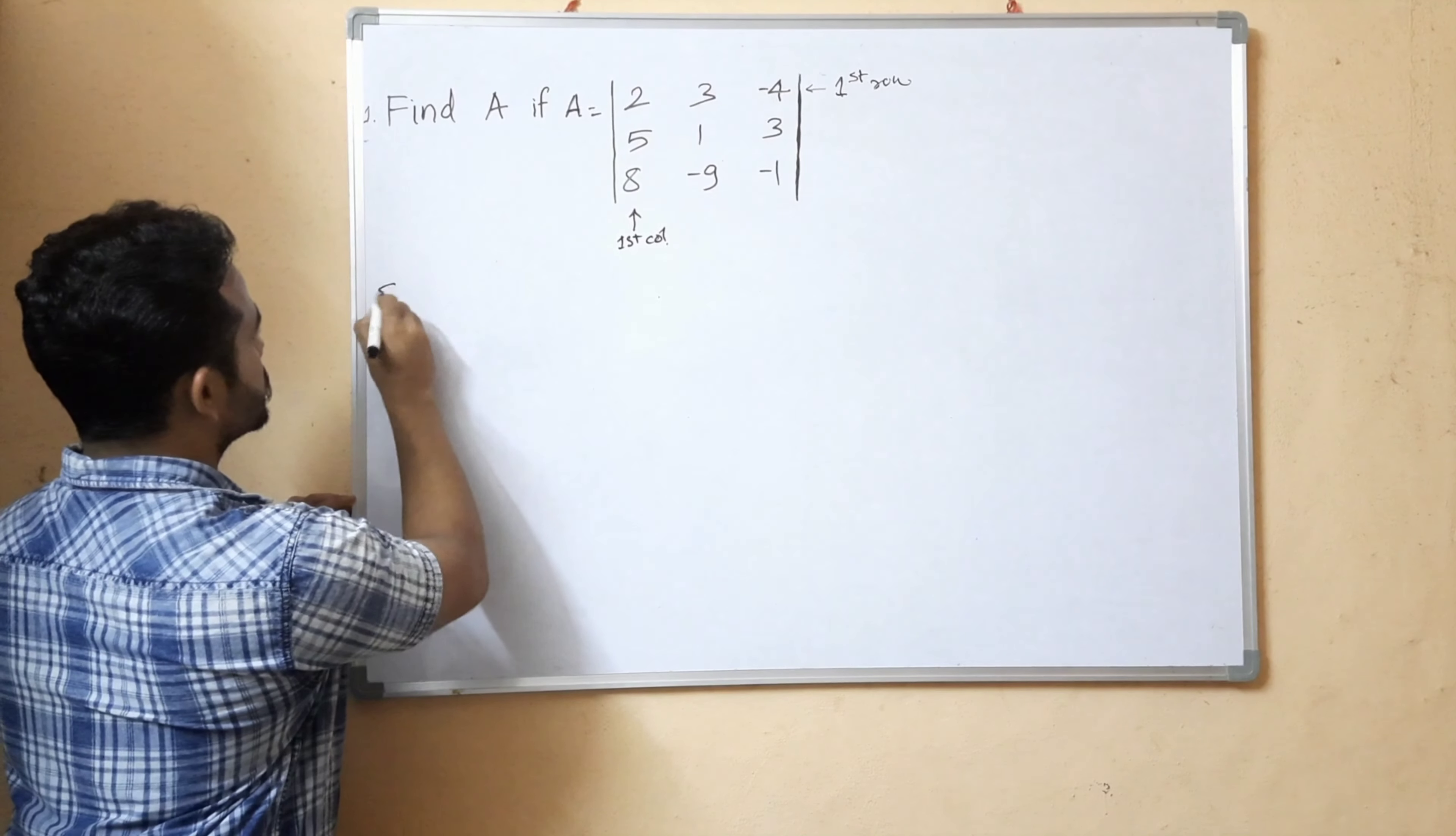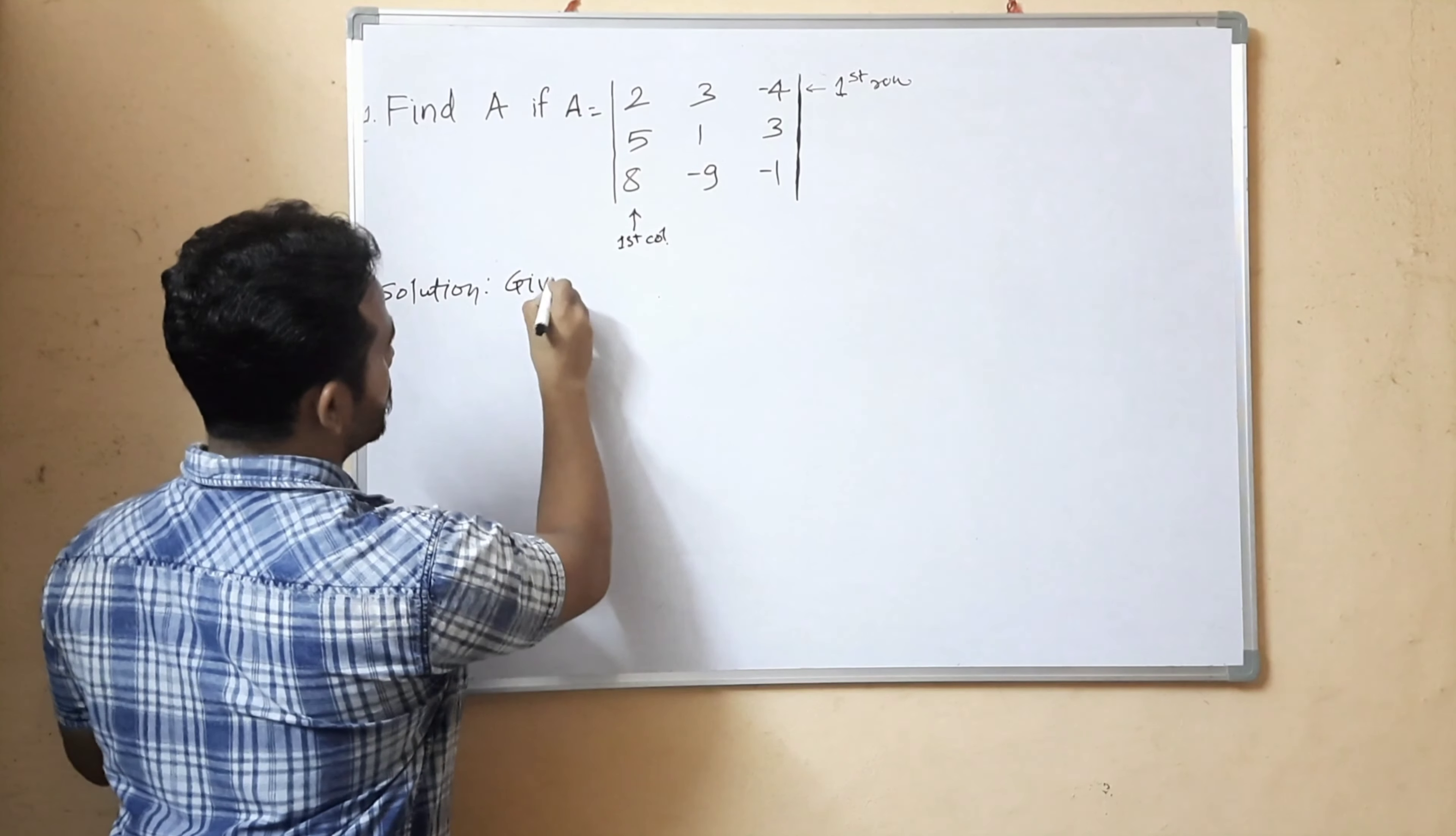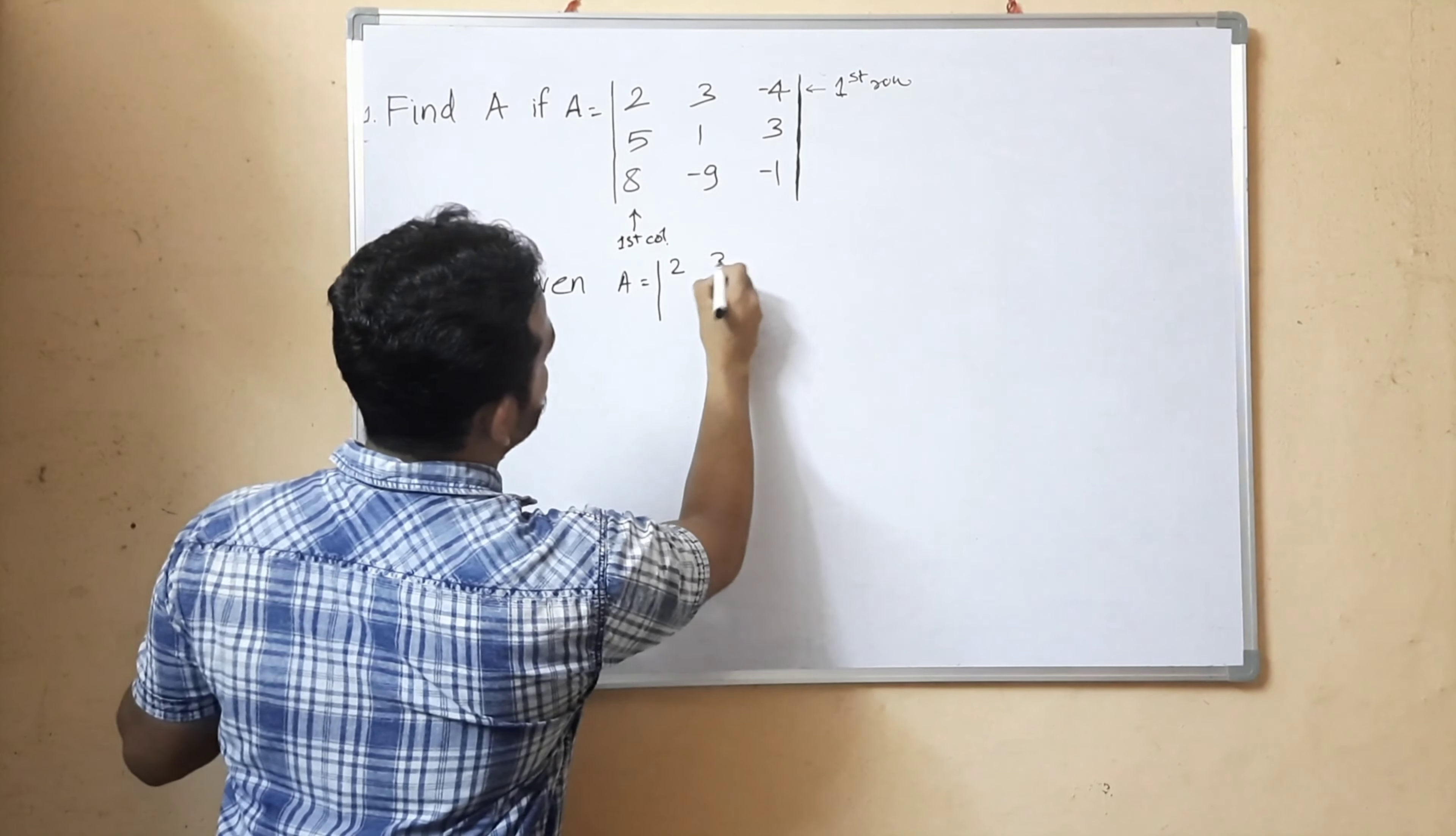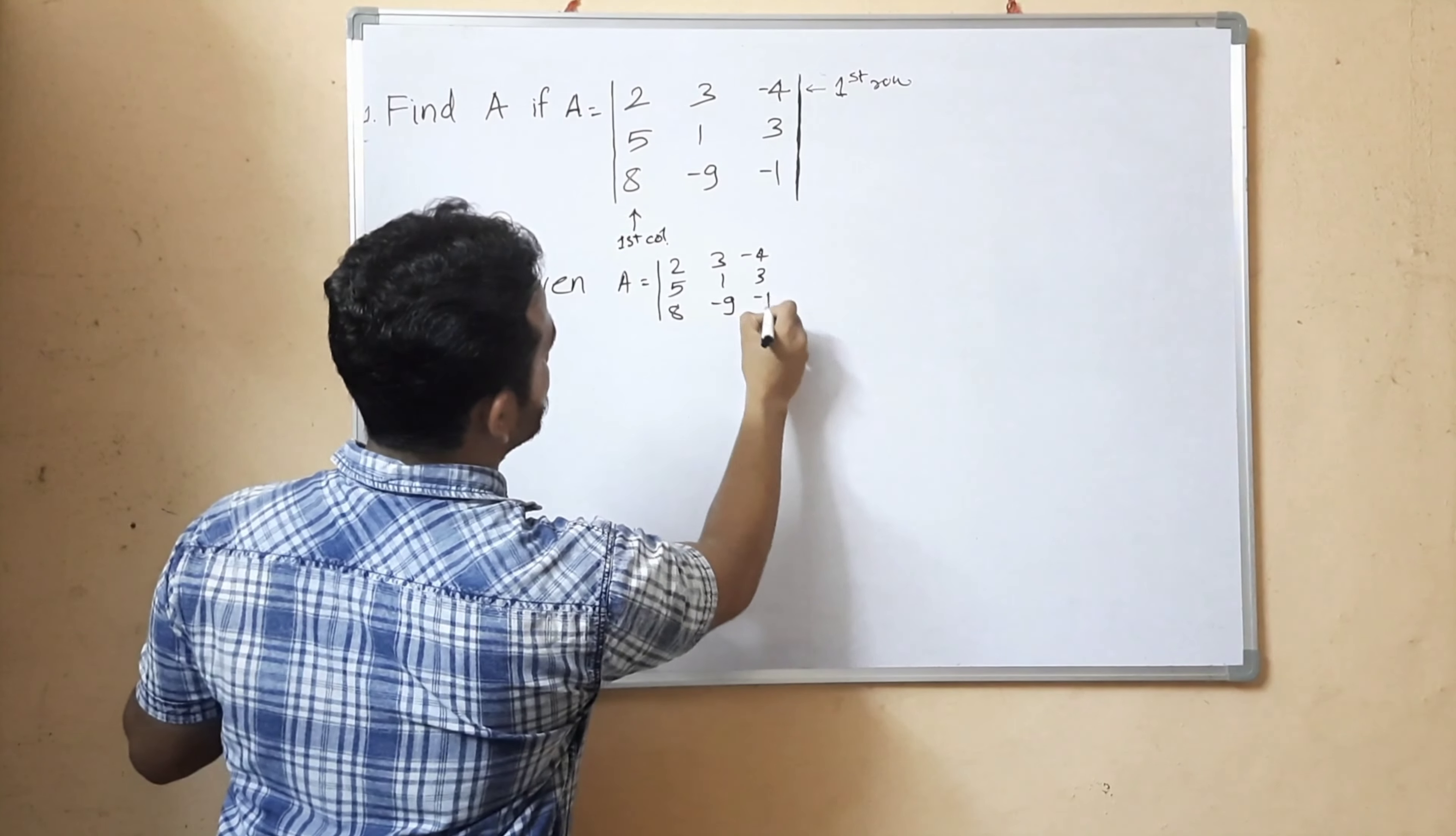What is the solution? This is the given: A is equal to 2, 3, 4 in the first row; 5, 1, 3 in the second row; and 8, minus 9, minus 1 in the third row.